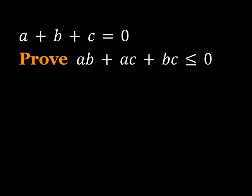Hello everyone. In this video we're going to be proving an inequality in two ways. We have a plus b plus c is equal to zero, and we are going to prove that ab plus ac plus bc is less than or equal to zero. I'll be presenting two methods. Let's start with the first one.